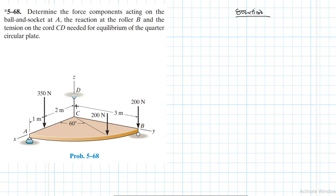So first and foremost, let's draw the free body diagram. We expect at the ball and socket at A, we expect a reaction in this direction that we are going to call AZ, and then a reaction in this direction that we are going to call AX, and then the reaction in this direction that we are going to call AY.